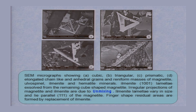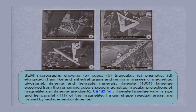Here in this slide, this magnetite is in exsolution with ulvöspinel, ilmenite, and hematite minerals. Ilmenite {100} lamellae exsolve from the remaining cube. The {100} lamellae — this is a lamella that exsolved from the remaining melt — and this is a cube-shaped magnetite. Irregular projections of magnetite and ilmenite are due to unmixing of the two mineral components.